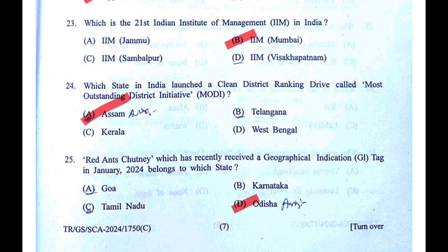Which state in India launched a cleanliness ranking drive called the Most Outstanding District Initiative (MODI)? Not West Bengal, not Kerala, not Telangana — the only state under BJP rule that would likely do this. Next: red ant chutney received a Geographical Indication tag in January 2024 — it belongs to Odisha.